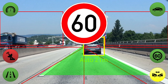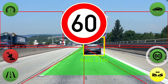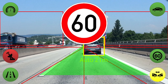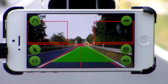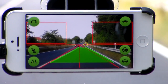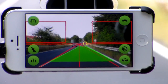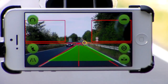The speed sign detection is represented by the speed sign symbol. The speed sign detection is responsible for identifying and classifying the speed signs in the camera image. Once a speed sign is detected, it is marked with a yellow rectangle on the screen.